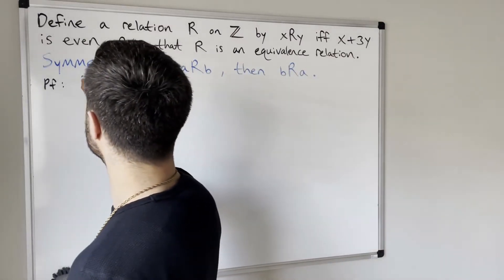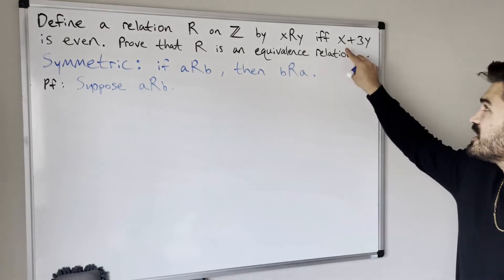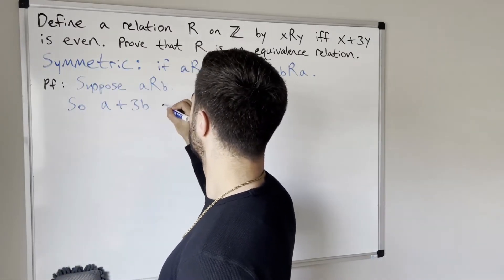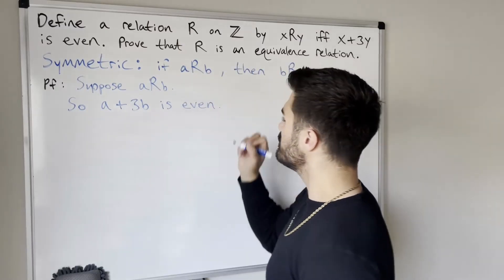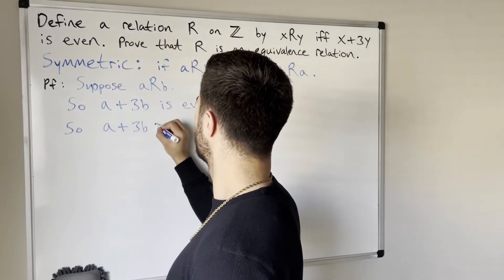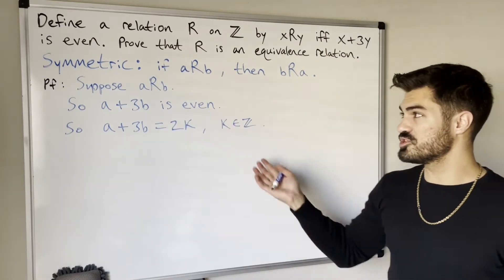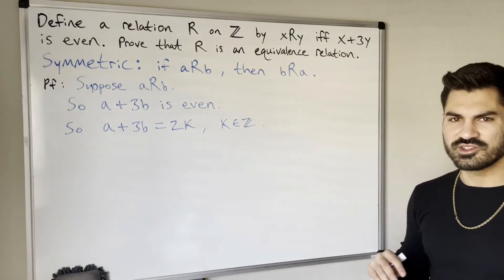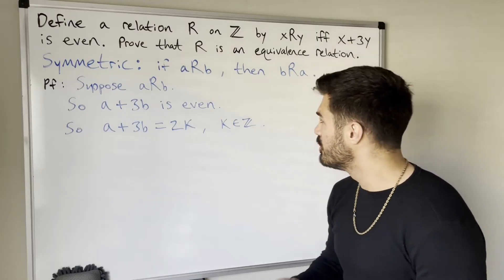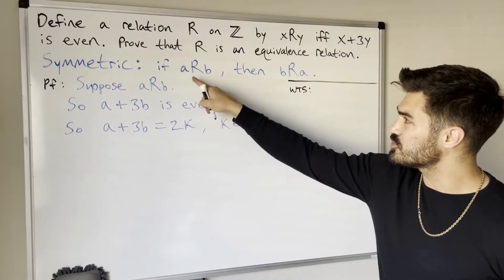Suppose a is related to b. By the definition of our relation, that means a plus 3b is even, so we can write a plus 3b equals 2k for some integer k. Now let's think carefully about what we want to show, because we may need to do some scratch work.